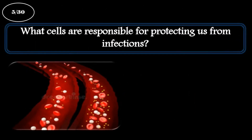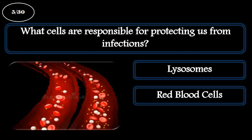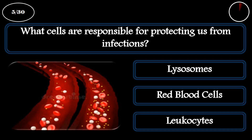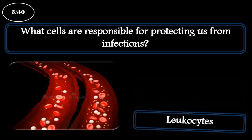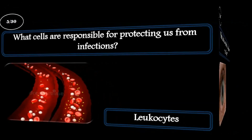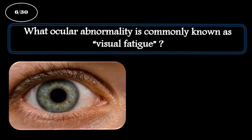Question 5. What cells are responsible for protecting us from infections? A: Lysosomes. B: Red blood cells. C: Leukocytes. The correct answer is leukocytes.